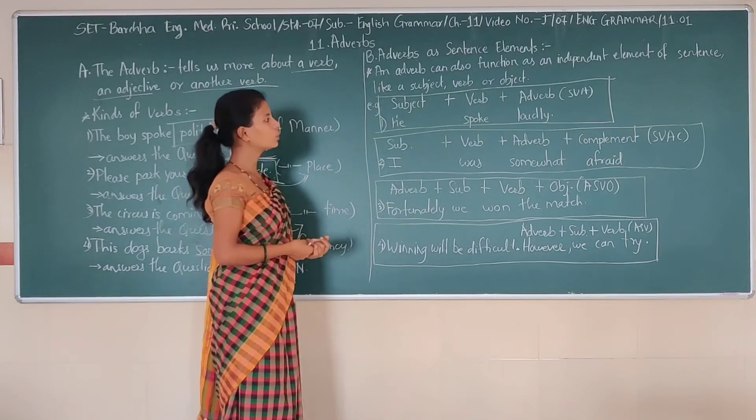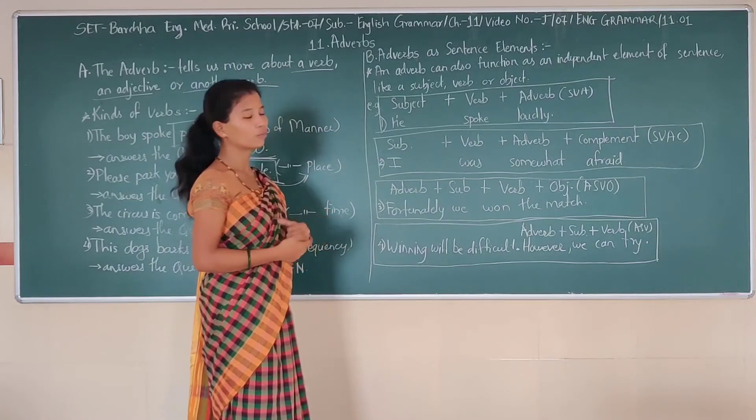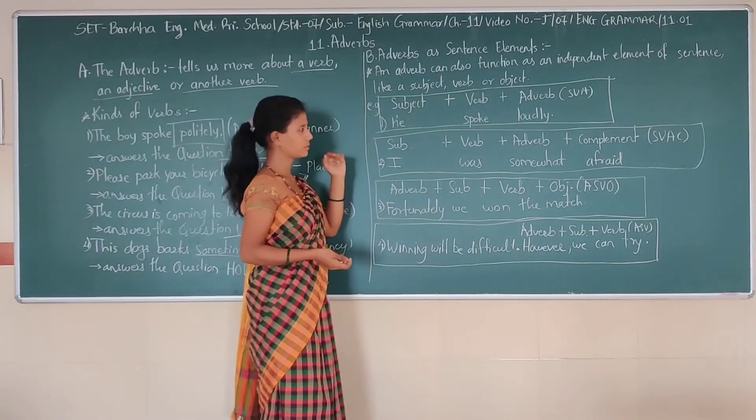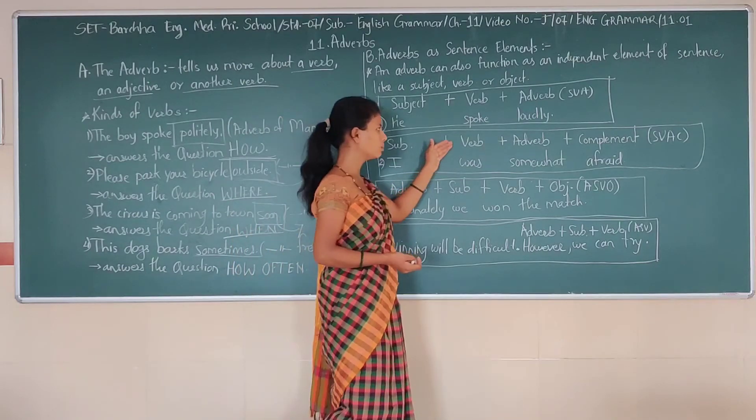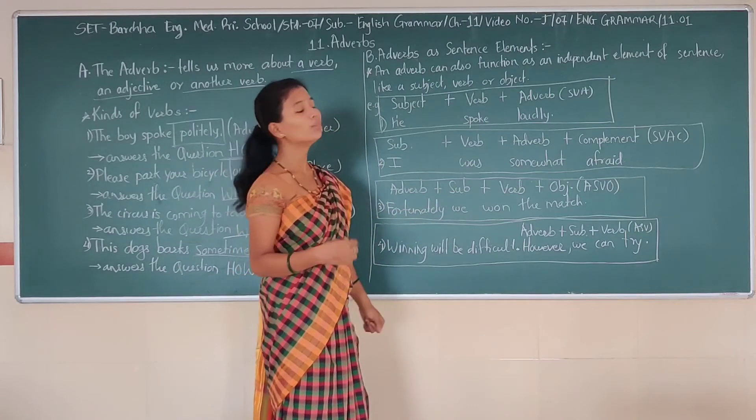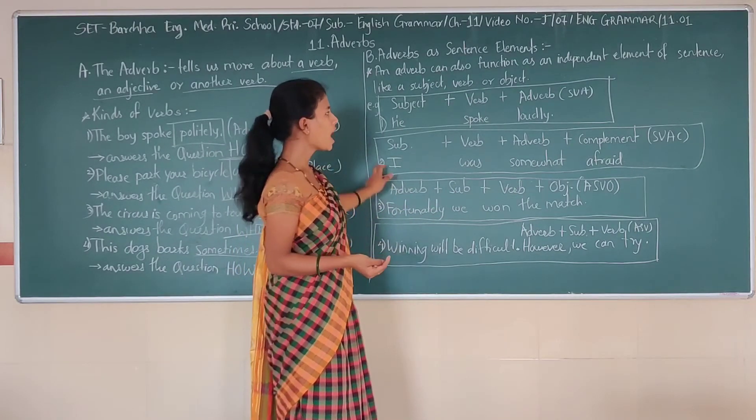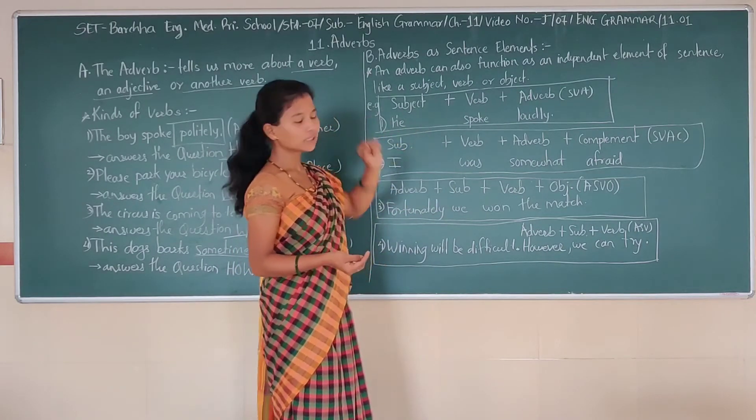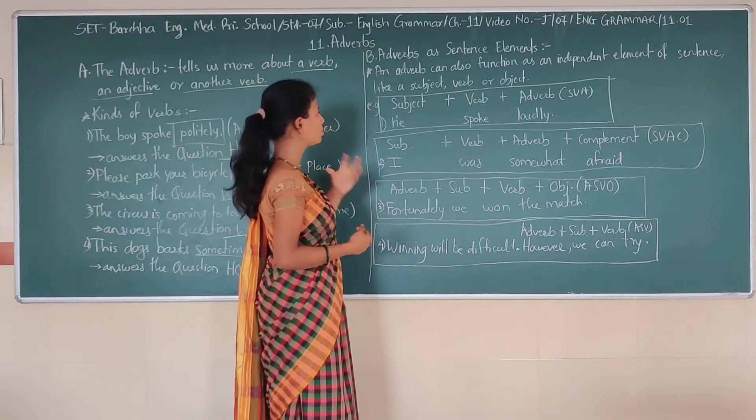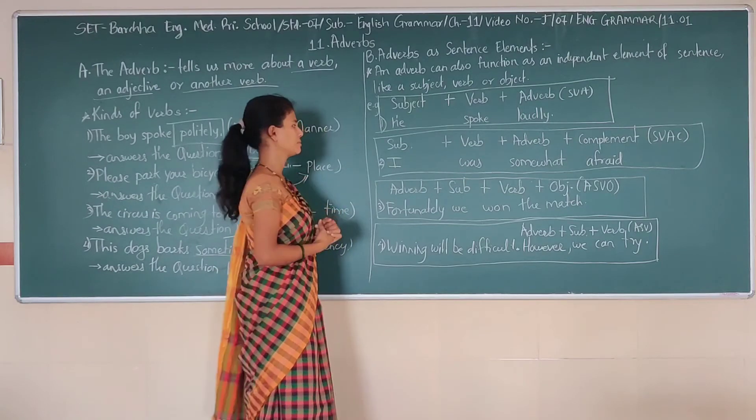Now see second one. I was somewhat afraid. Now, I as you know is the subject, was is a verb and somewhat is adverb. Plus, afraid is compliment. So SVAC is the formula of this sentence.